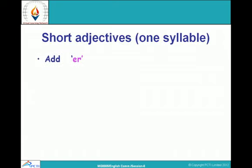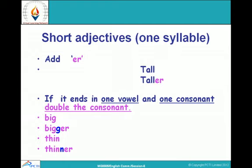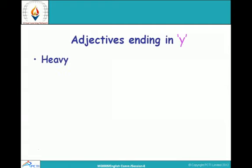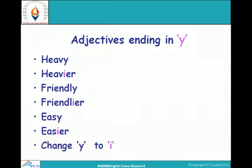Short adjectives with one syllable take -ER. For example, tall becomes taller. If a word ends with one vowel and one consonant, we double the consonant — like big (B-I-G), the G doubles to give 'bigger'. Similarly, thin ends with a consonant, so we double the N to get 'thinner'. For adjectives ending with Y, we change Y to I and add -ER — so heavy becomes heavier, friendly becomes friendlier, easy becomes easier.